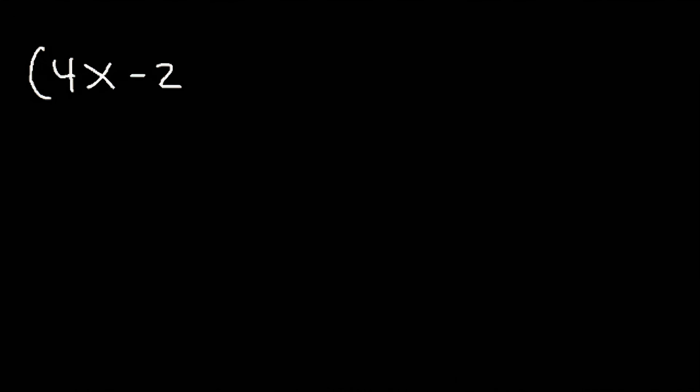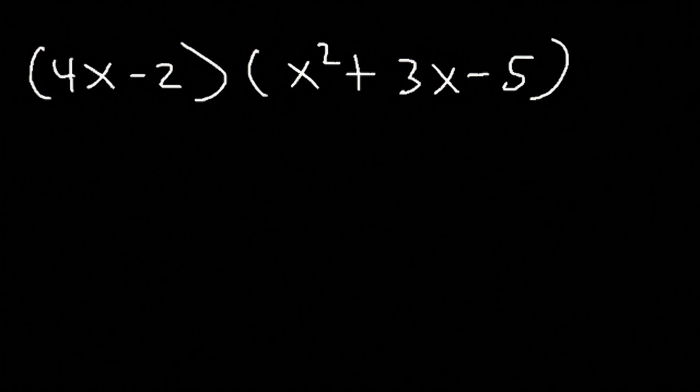Now what if we want to multiply a binomial by a trinomial? When we multiply a binomial by another binomial — two terms by two terms — we initially get four terms before combining like terms. In this example, we have a binomial with two terms and a trinomial with three. 2 times 3 is 6, so before combining like terms we should have six terms. So let's go ahead and multiply.